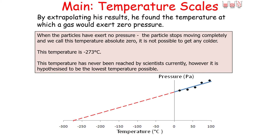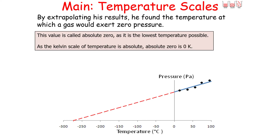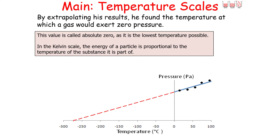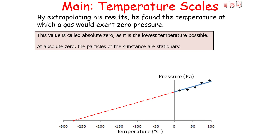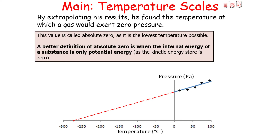It's not possible to get any colder than absolute zero. On the Celsius scale, this temperature is minus 273 degrees Celsius. This has never actually been reached by scientists but is hypothesised to be the lowest temperature possible in our universe. As the Kelvin scale is absolute, absolute zero is 0 degrees Kelvin. In the Kelvin scale, the energy of a particle is proportional to the temperature of the substance. So at absolute zero, particles are stationary because they have no kinetic energy — ignoring quantum mechanical effects. A better definition is that absolute zero is when the internal energy of a substance is only potential energy, because the kinetic energy store is zero — the internal energy is at its minimum.